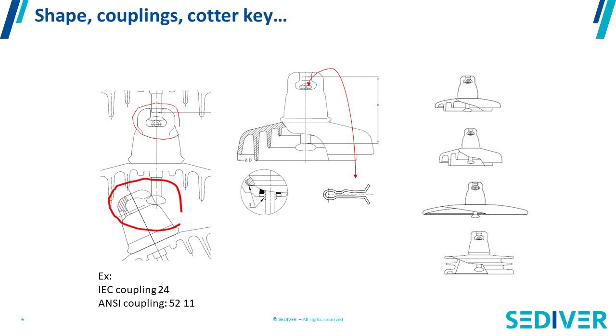And you have two different standards worldwide which are covering those definitions. In IEC you have couplings which have numbers like 16, 20, 24. In ANSI, the American standard, the couplings are reference 52-5, 52-11. In the standard you have description of every dimension of every socket and every ball of every type of coupling. And unfortunately IEC and ANSI are not compatible. So if you have insulators which are used on the American market, you're going to use a shape of socket and ball that is different from what is being used anywhere else around the world, which is using IEC. So coupling is a word to describe the style of connection between two insulators in order to build an insulator string.